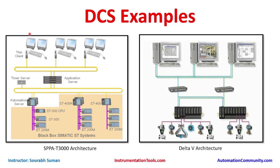Another type of DCS is the DeltaV architecture. Here also, controllers are connected to field automation via DeltaV IO cards, and all these are connected to DeltaV workstations. The topology appears to be redundant — meaning if one link fails, the other remains alive and the system stays up. This is done for high availability and to avoid issues such as denial-of-service attacks.